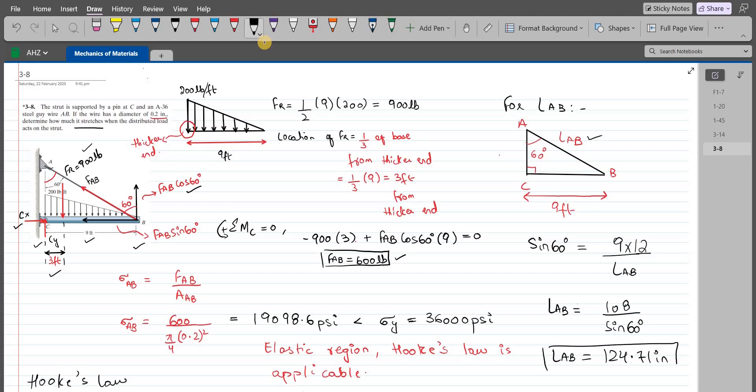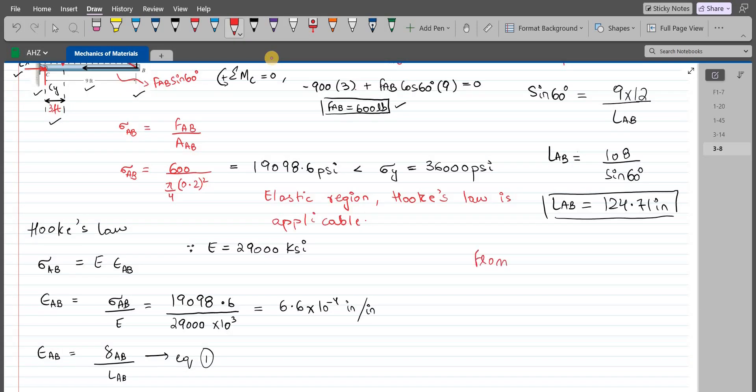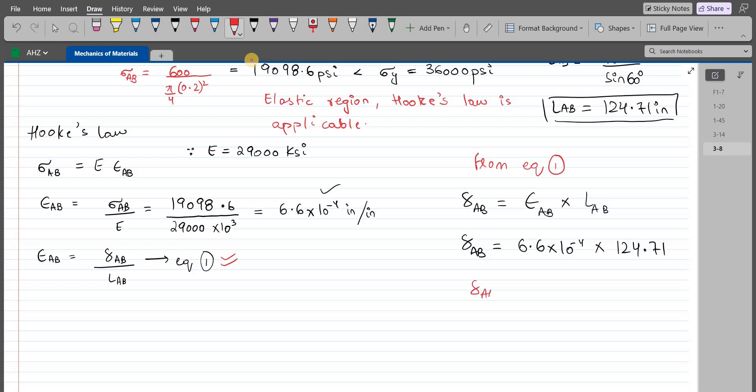Now we can substitute it into equation 1. From this equation, the stretch delta AB equals average normal strain epsilon AB times the unstretched length LAB. So delta AB equals 6.6 times 10 to the negative 4 times 124.71. Delta AB comes out to be 0.0823 inch. This is our answer, and this is the stretch in the A36 steel guy wire.